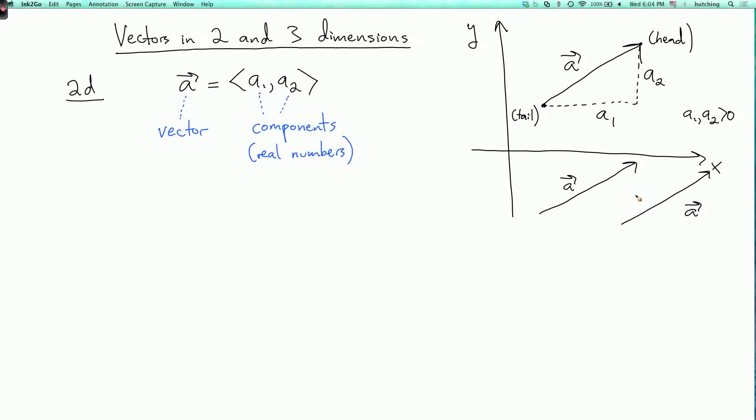Okay, now there are various basic operations we can do on vectors. The first of these is addition of vectors. So suppose I have another vector B with components B1 and B2. We define A plus B by adding the components. So the first component is A1 plus B1, and the second component is A2 plus B2.